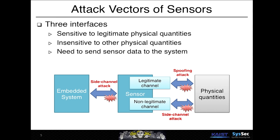Also, sensors have to deliver information to embedded systems. If you can override the wire between the sensor and the embedded system, one can launch a side-channel attack as well.